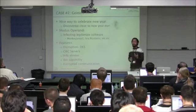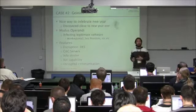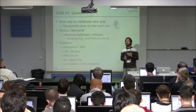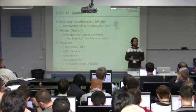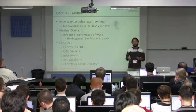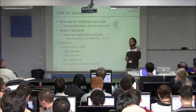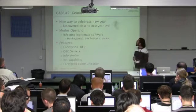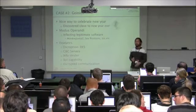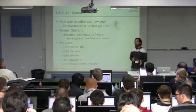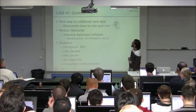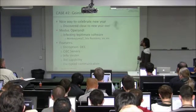Another one is G&B, discovered close to New Year's Eve. A lot of people made the prediction that 2010 was going to be a hot year for mobile malware — and eventually that prediction was fulfilled. G&B was being spread on top of third-party hosting instead of the Android Market. The modus operandi is basically infecting legitimate software.